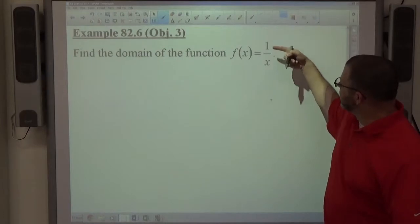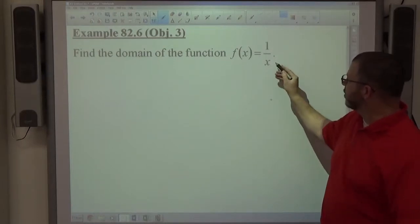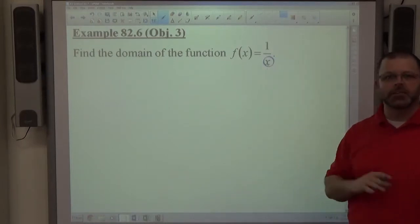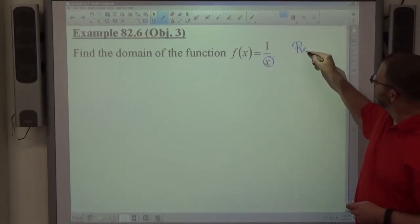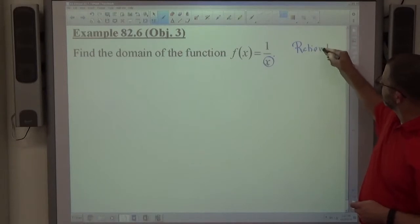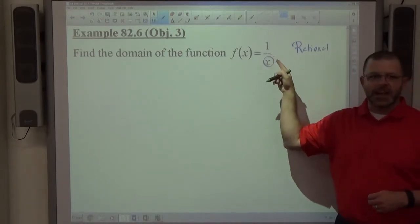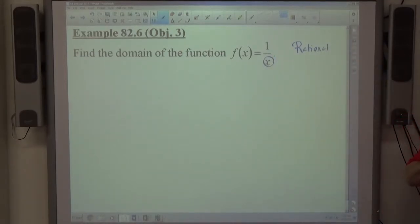What I see, though, is something divided by something. So there's an x in the denominator. That's the key to this problem that makes it this type of function. This is called a rational function. Basically, any fraction that has a variable in the denominator is a rational function.